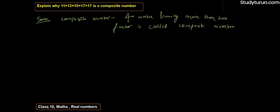Why 2? Because any number has 1 and the number itself as factors. So now let's look at the question. What we see in this question is 11 × 13 × 15 × 17 + 17. If we take 17 common from all the numbers.